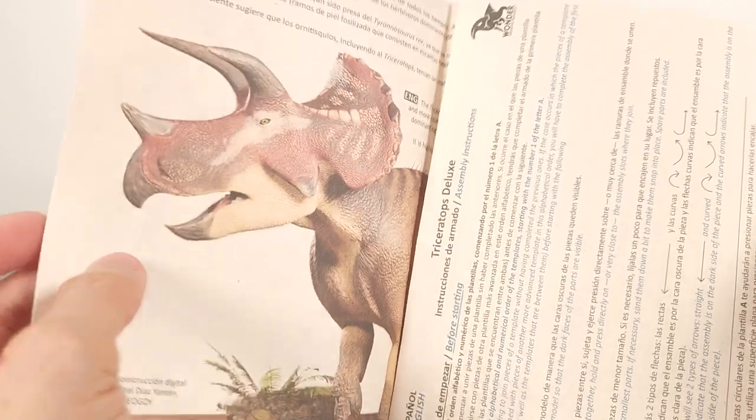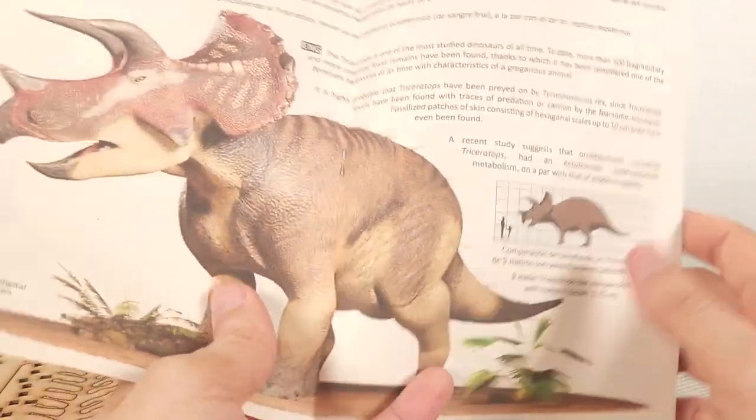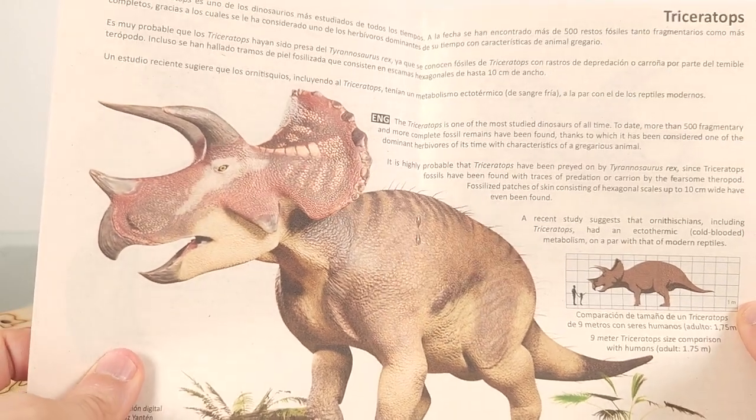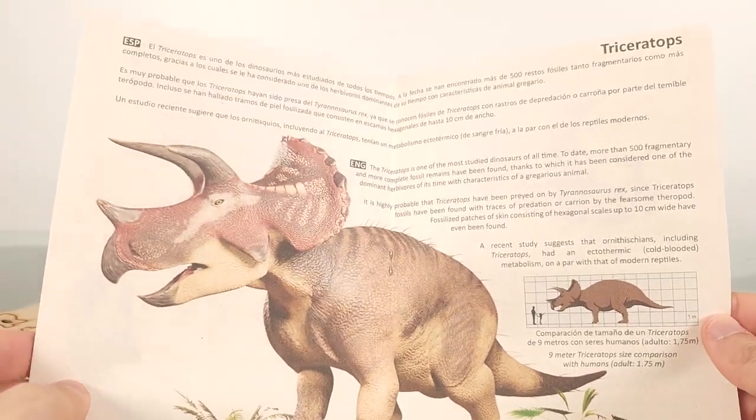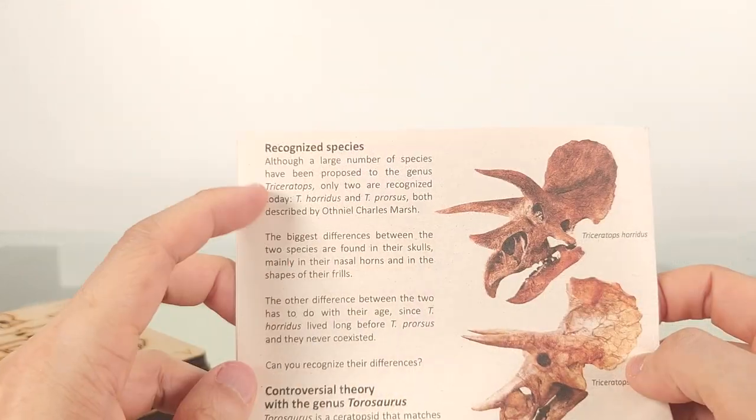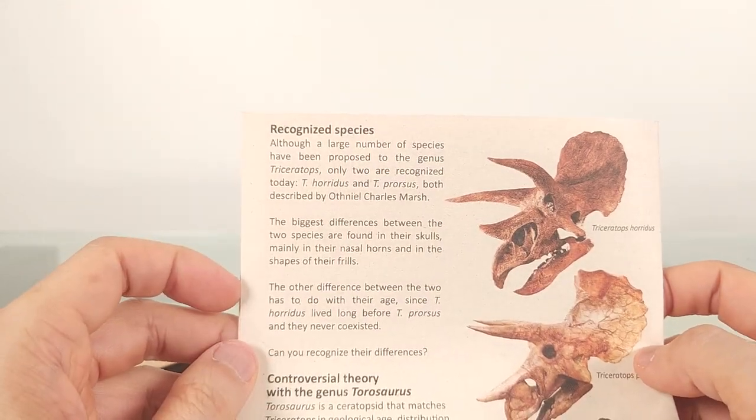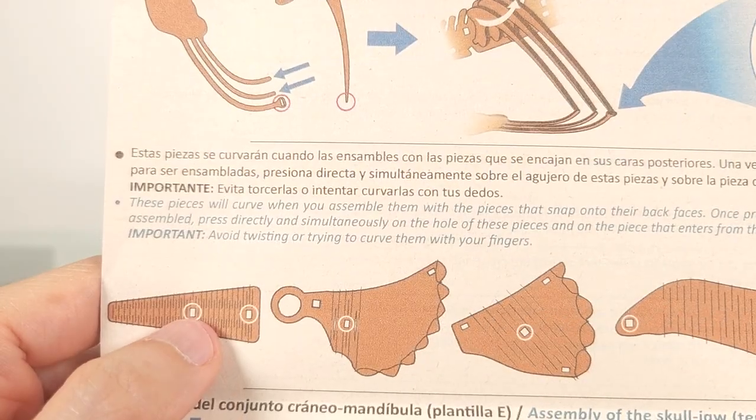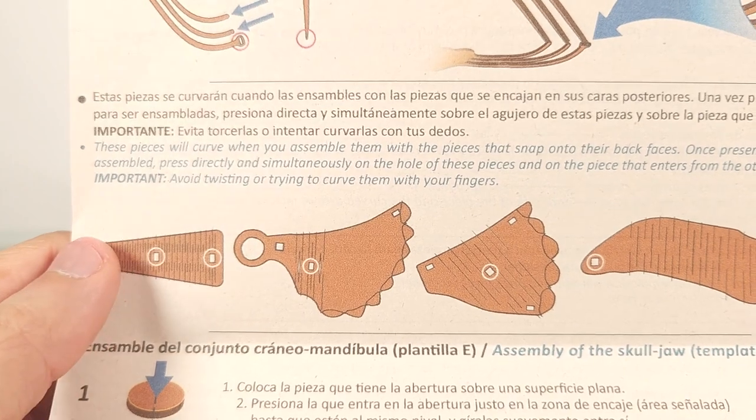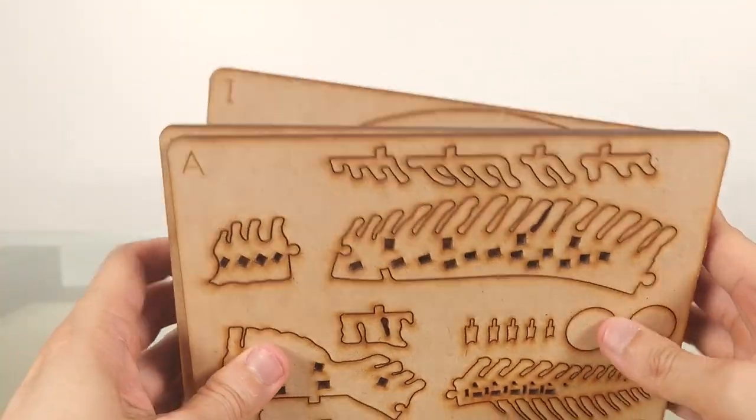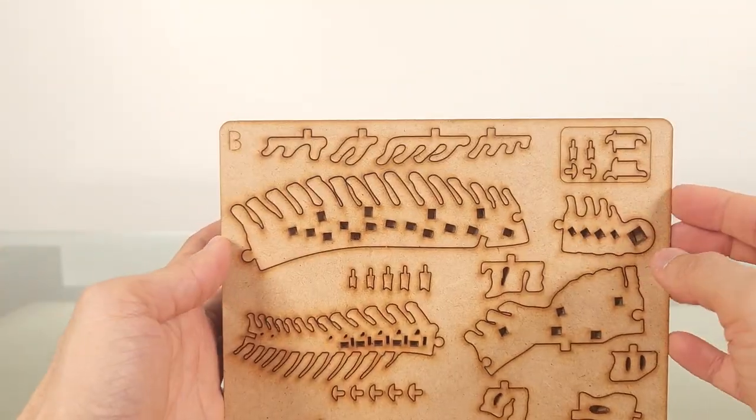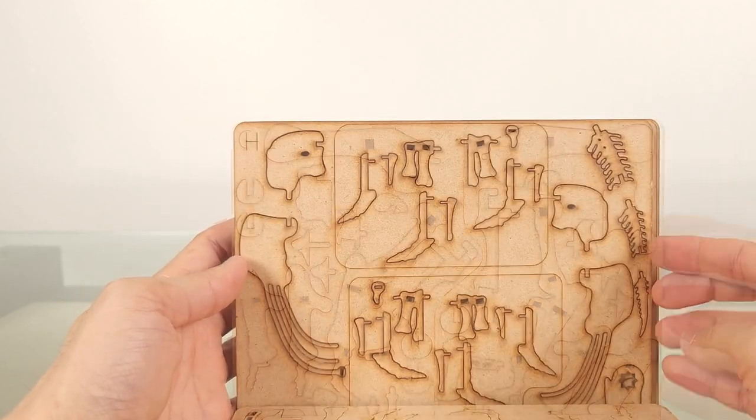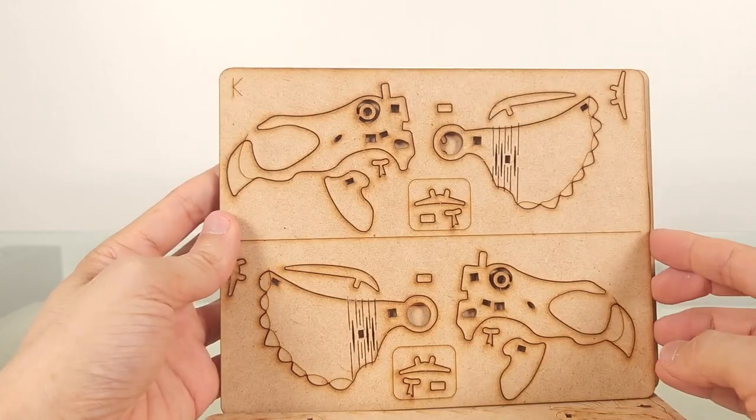Everything is recyclable. As with the previous models, there's a nice booklet that comes with it. It's bilingual in English and Spanish. The art is really pleasing, as is the quality of the paper, and there's actually good information about Triceratops itself, and also included these instructions for the trickier bits.